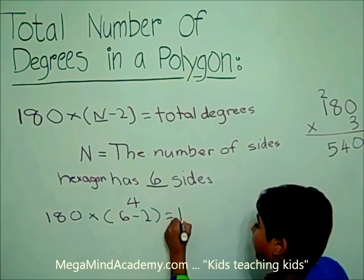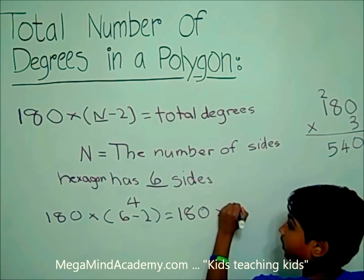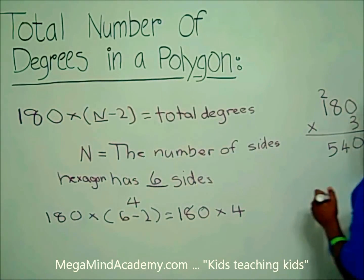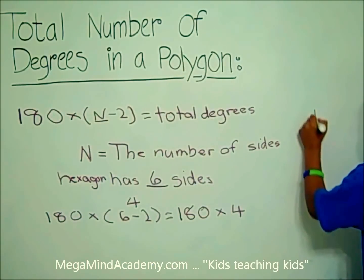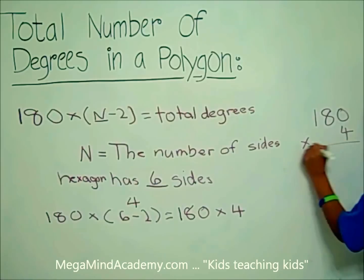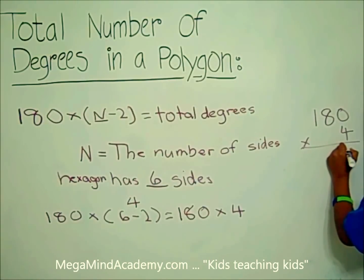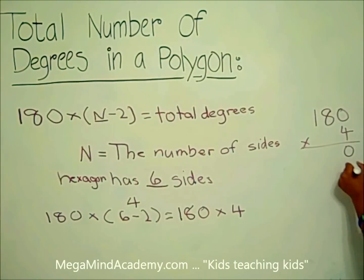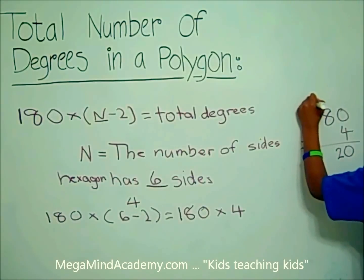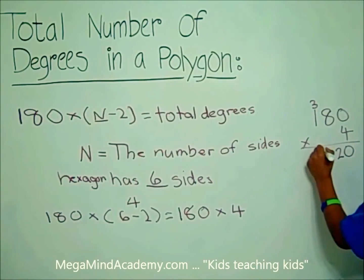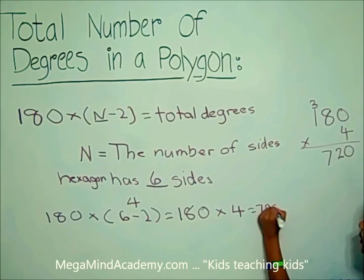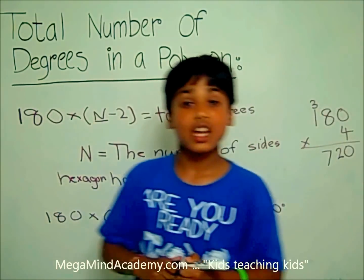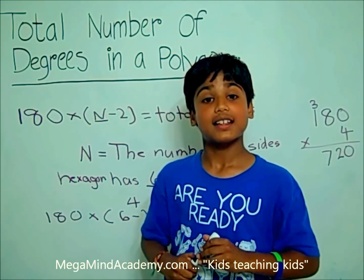Let's find out what 180 times four equals. Four times zero is zero. Eight times four is 32 — two goes here and three goes here. Four times one equals four plus three, which equals 720. So 180 times four equals 720 degrees, which is the total number of degrees inside a hexagon.